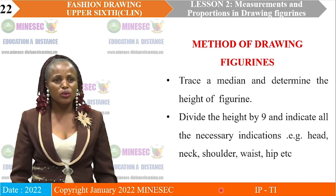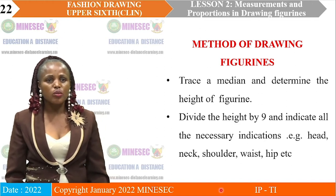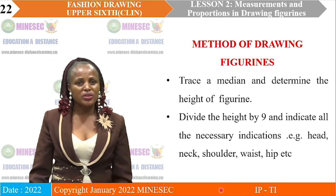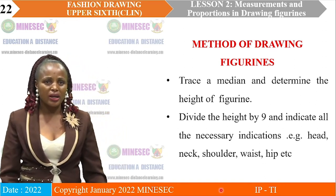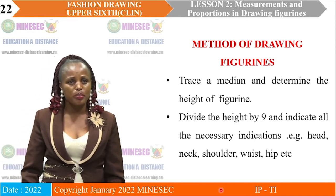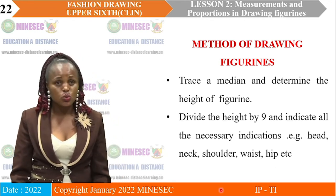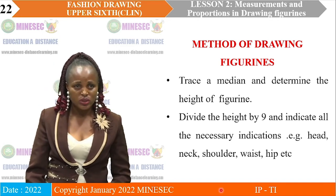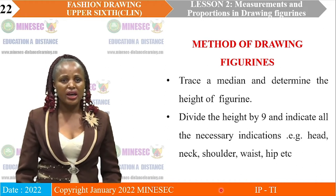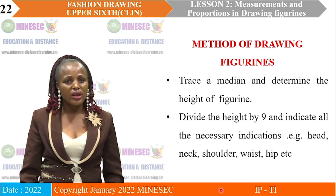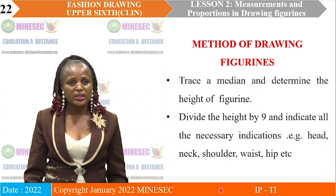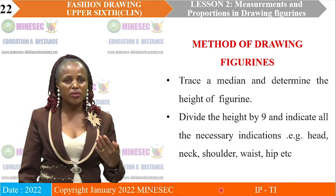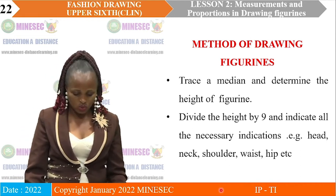We have the method of drawing figurines. You trace a medium and determine the height of the figurine. For example, if it is a 27-centimeter figurine, you frame your paper and look for the middle of the paper so that you can start constructing your figurine. If it is 27 centimeters, the height of your figurine is 27 centimeters. You divide that height by 9 and indicate all the necessary indications — the neck, the shoulder, the waist, the hip, etc. When you construct your figurine, it is always very important to indicate all what is supposed to be there.